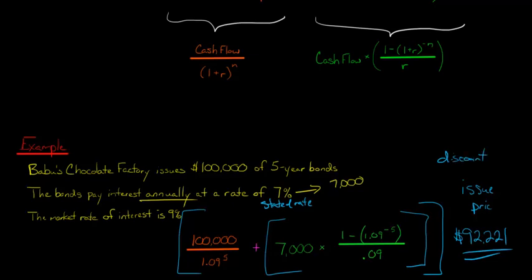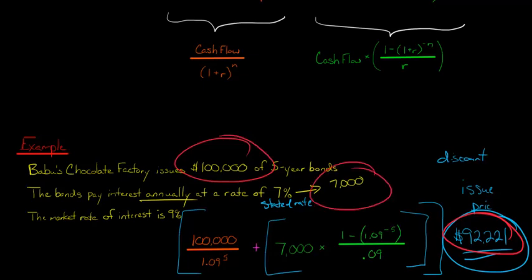And so the investors are actually just paying cash of $92,221, and what they're getting in exchange is they're getting the right to get five years from now $100,000 plus the $7,000 a year interest payments.